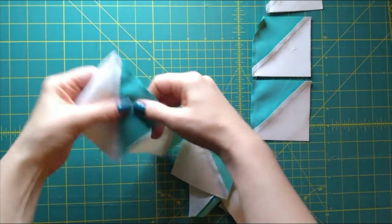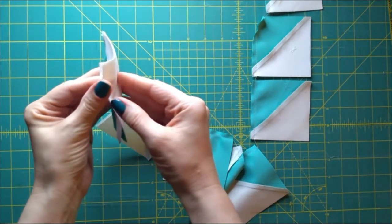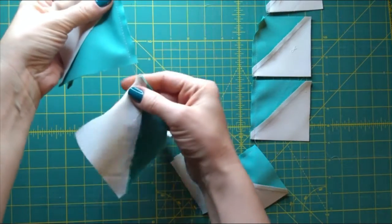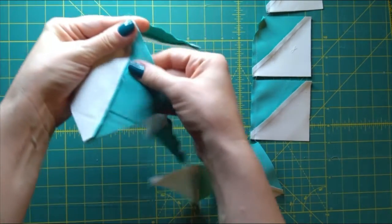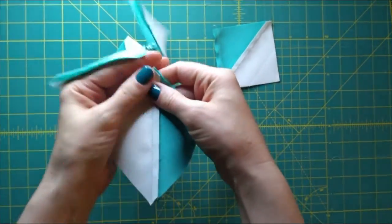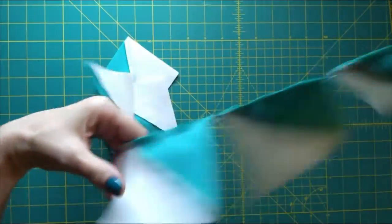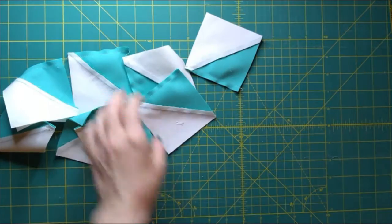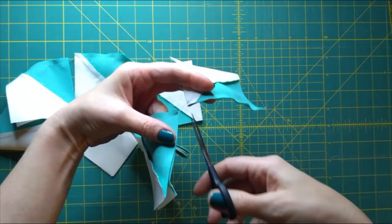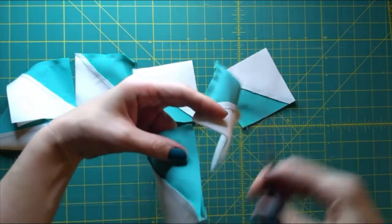This is chain piecing. I fed one pair of half square triangles into the machine and I didn't snip the thread and I just fed another one through and another one and another one. And I just kept going so they're all connected in a big chain. And then I will just take my little snipper scissors and snip them apart.